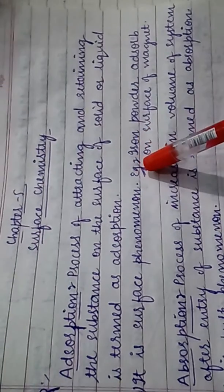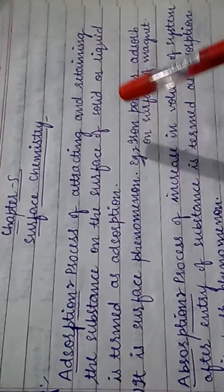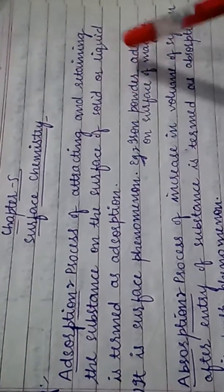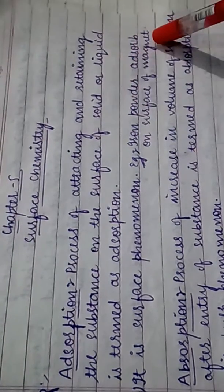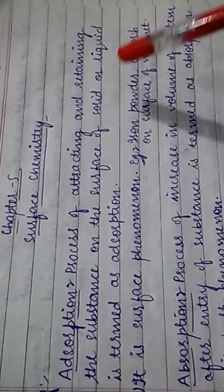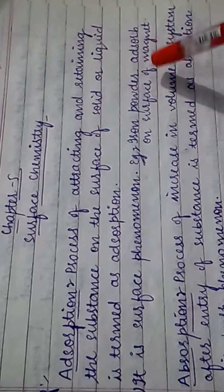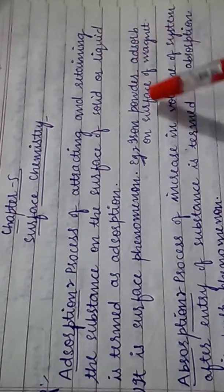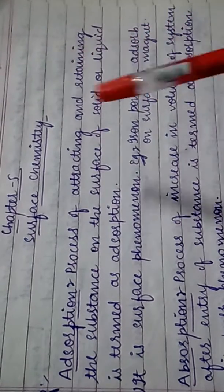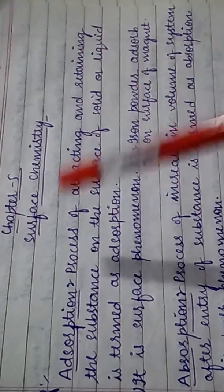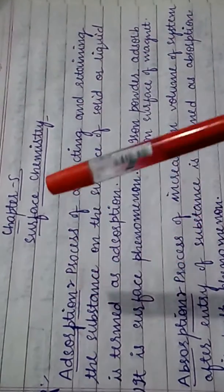Here is an example: when we take iron powder to a magnet, the iron powder gets adsorbed on the surface of the magnet. So it is an example of adsorption.